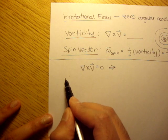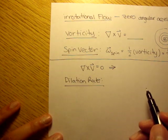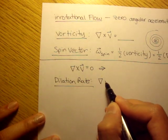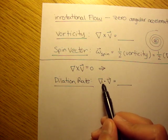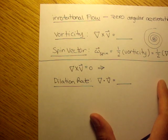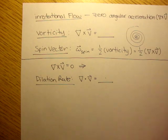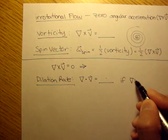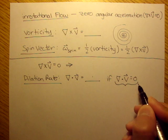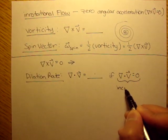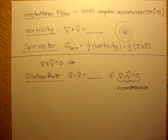The last definition would be dilation rate. Dilation rate is just del dot v. So whatever number this equals when you dot del with the velocity field, that number is going to be your dilation rate. And we know that if del dot v is equal to zero, then the fluid is incompressible.